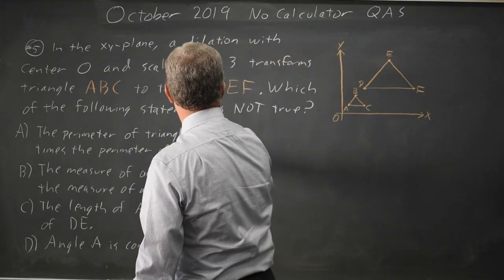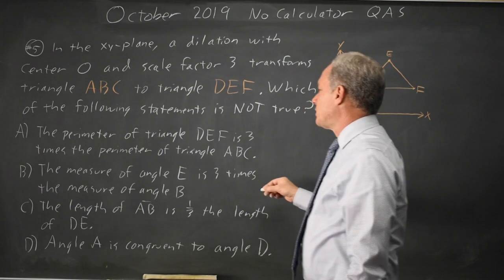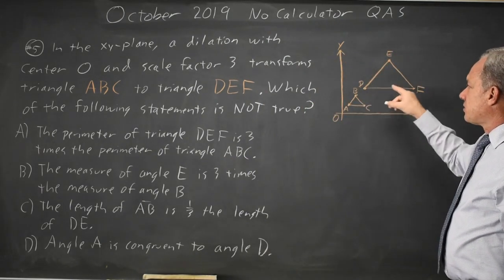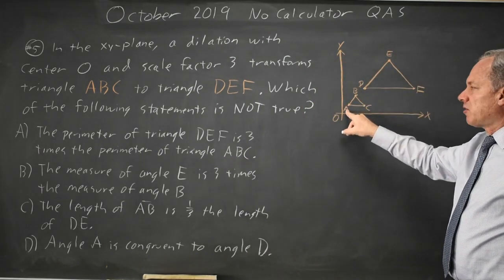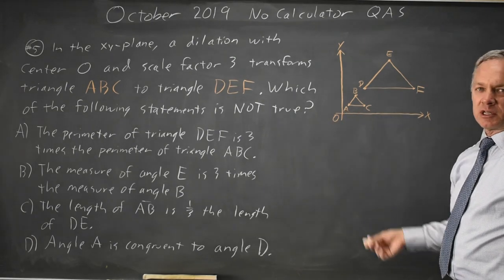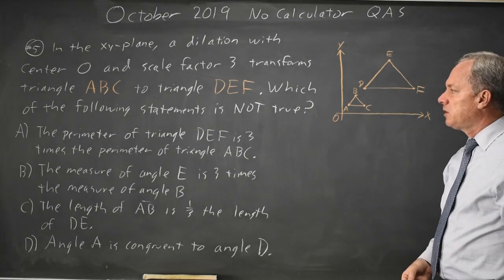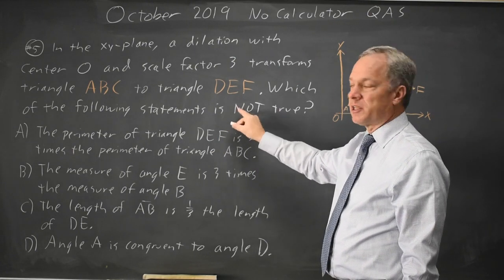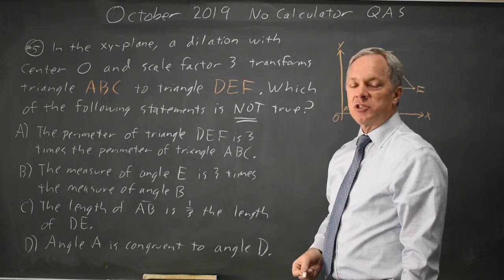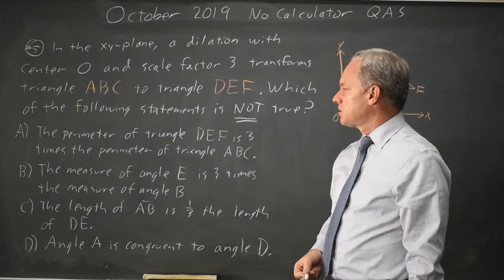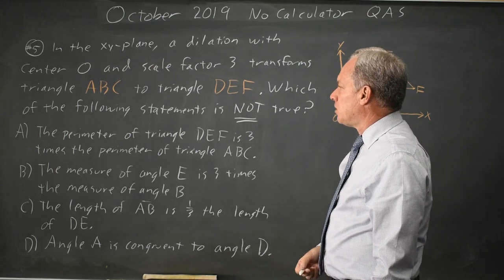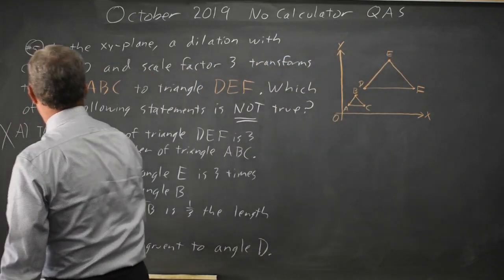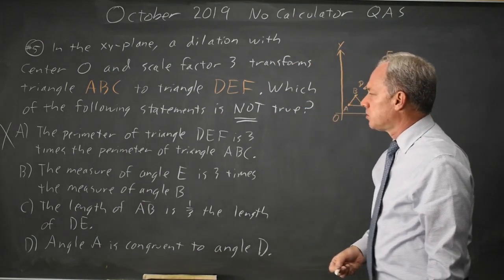Choice A: the perimeter of DEF is three times the perimeter of ABC. DEF is the larger one, and we have a scale factor of three, so it would have three times the perimeter — that is true. If we had not read carefully and noticed the word 'not,' we might choose A without reading the rest of the choices. But since A is true and they ask which is not true, we can eliminate it.